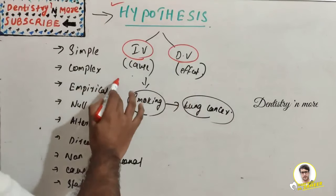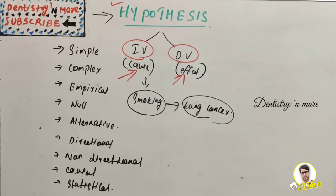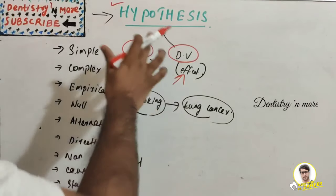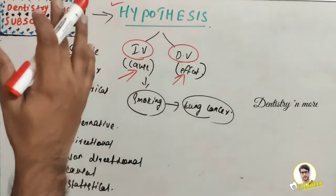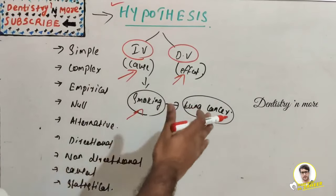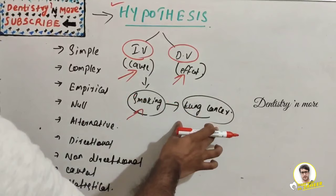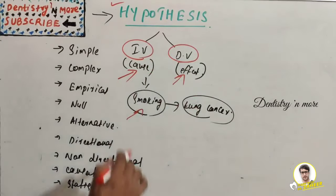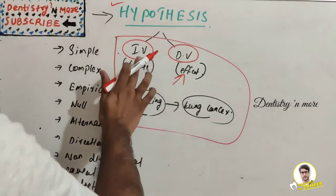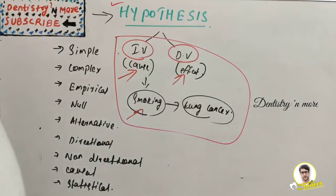The independent variable is the cause and the dependent variable is the effect. A study analyzes or finds out the relationship between the independent variable and dependent variable. Take the example of smoking and lung cancer — a classic example. Smoking causes lung cancer. Lung cancer can be caused by many things, but smoking has a very significant contribution. So smoking is the cause and lung cancer is the effect. The independent variable acts like a cause and the dependent variable acts like an effect.